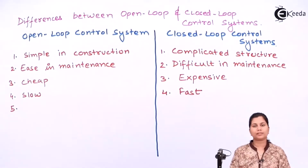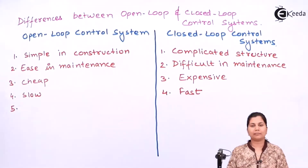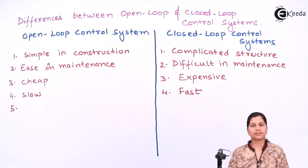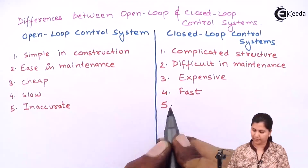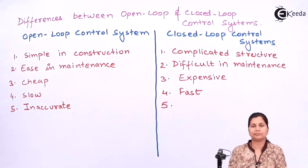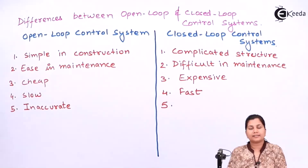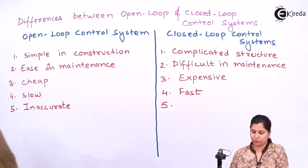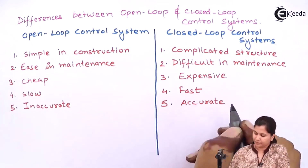The open loop control system, as it does not have any feedback structure, there is no mechanism for comparing the output and the input, so no corrections can be made — these systems are inaccurate. Whereas the closed loop control system has feedback elements and the output is compared with the input, so the results are more accurate.